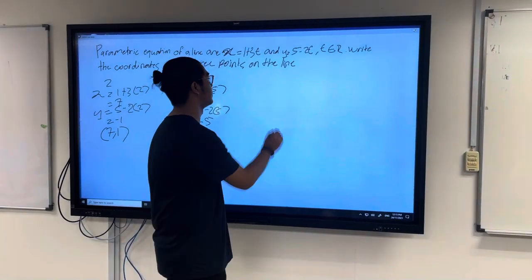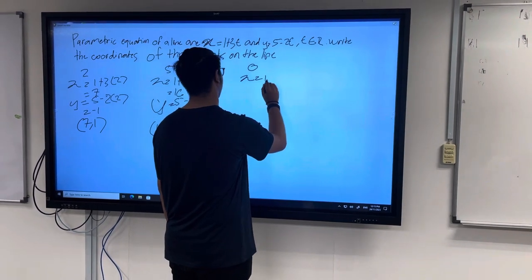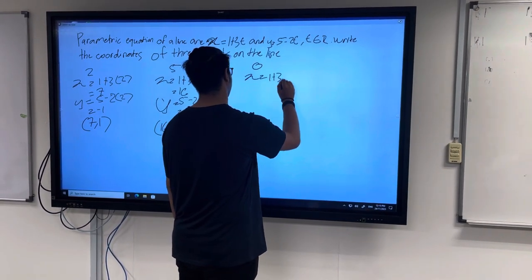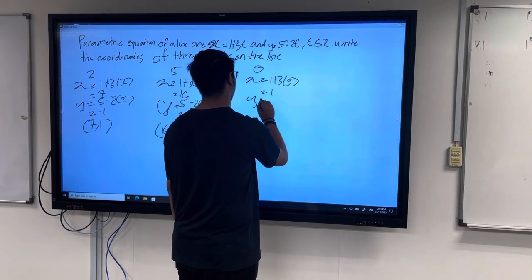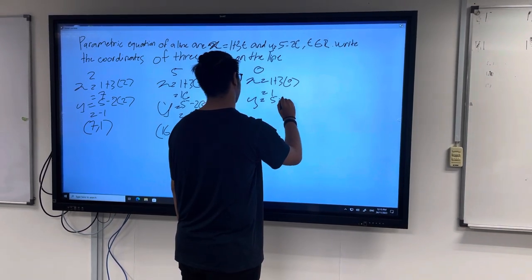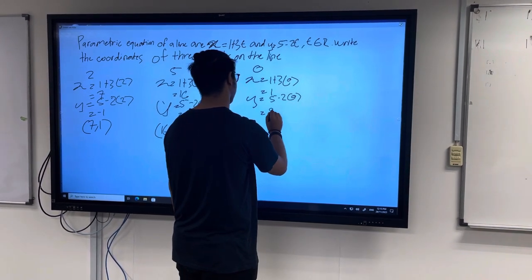The last one we'll be using is 0. So x equals 1 plus 3 times 0, equals 1. y equals 5 minus 2 times 0, equals 5. The point is (1, 5).